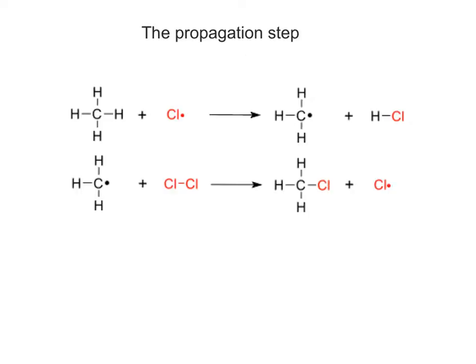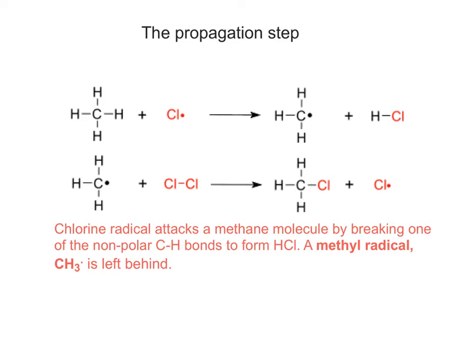So the next step is the propagation step. So we're still staying with chlorine, and we're imagining that we've now got a chlorine radical attacking a methane molecule. So in the first equation at the top, a chlorine radical attacks a methane molecule by breaking one of the non-polar C-H bonds to form HCl. And a methyl radical is left behind.